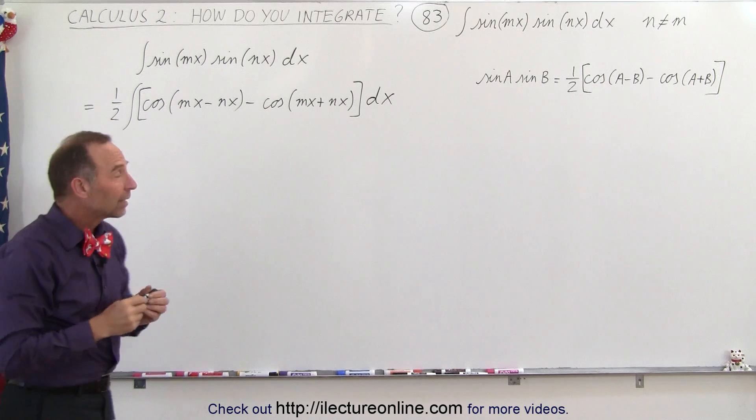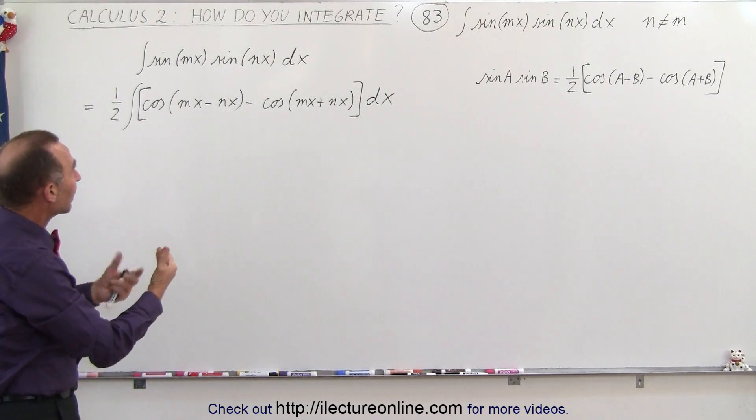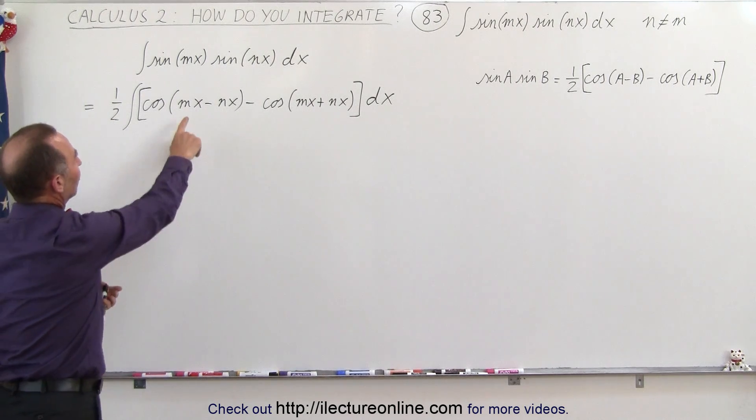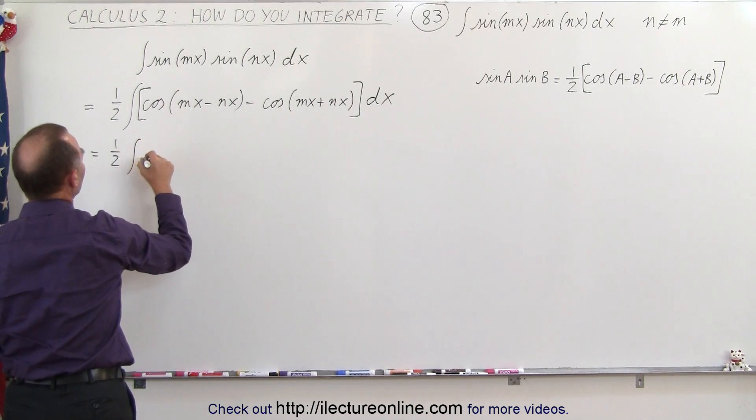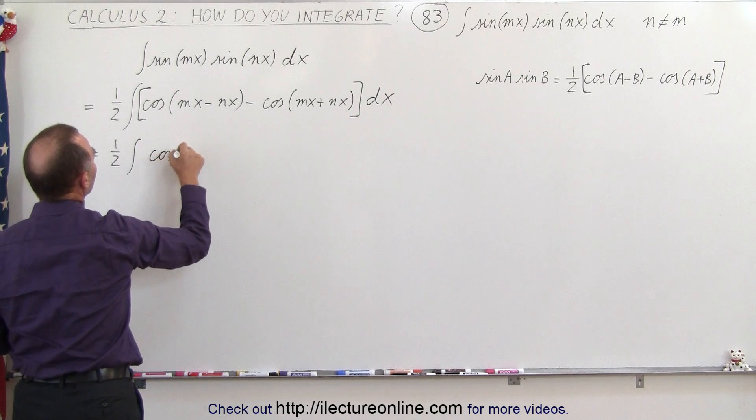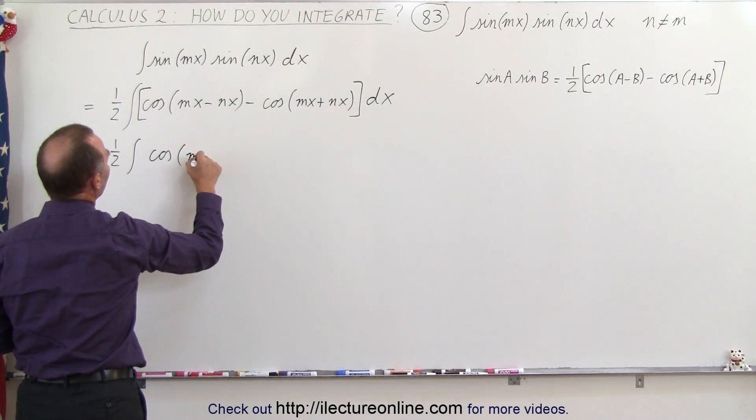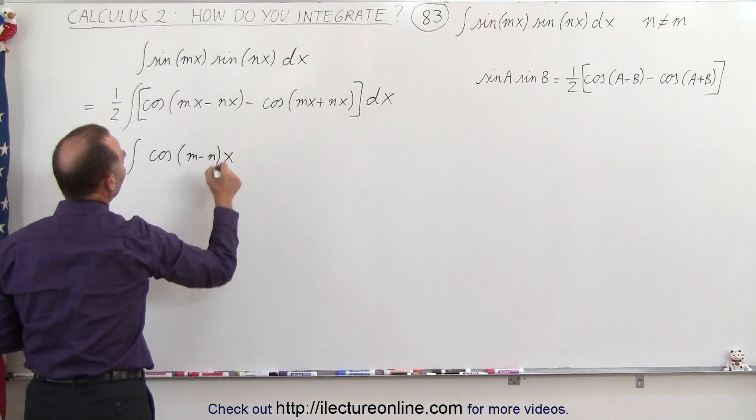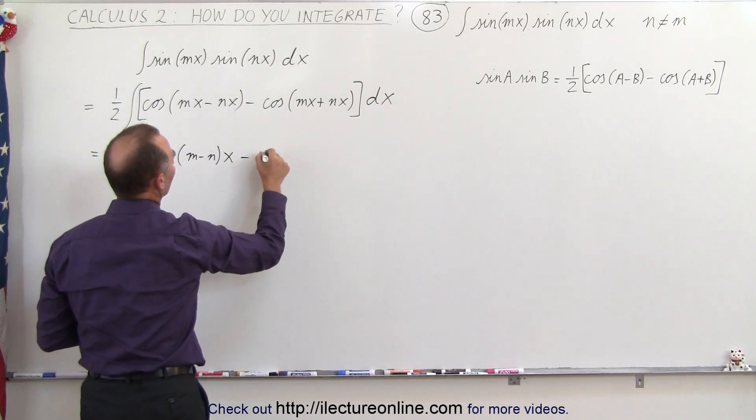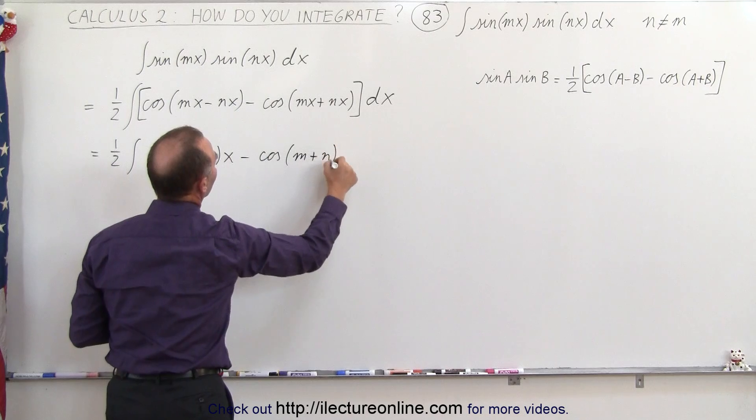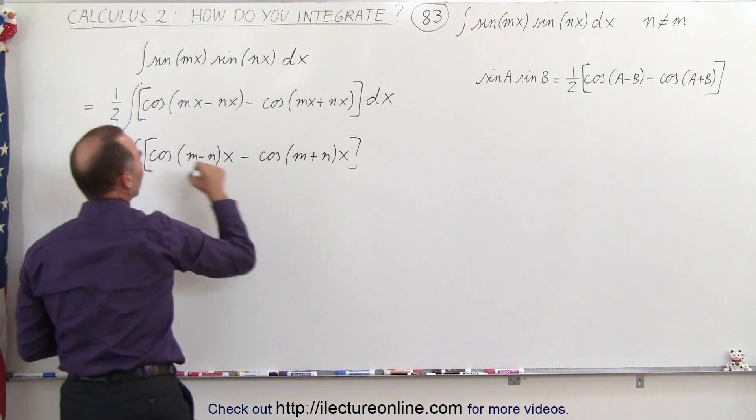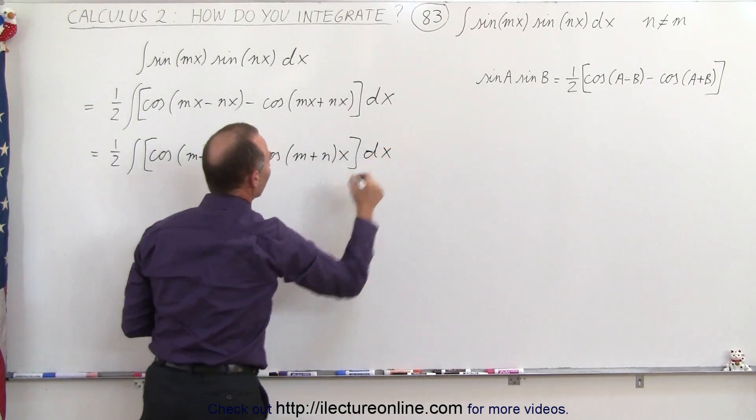Now the next step to make it easier to see what we need to do next is to factor out an x here. So this is equal to one-half times the integral of the cosine of m minus n times x minus the cosine of m plus n times x, and again put brackets around it, times dx.